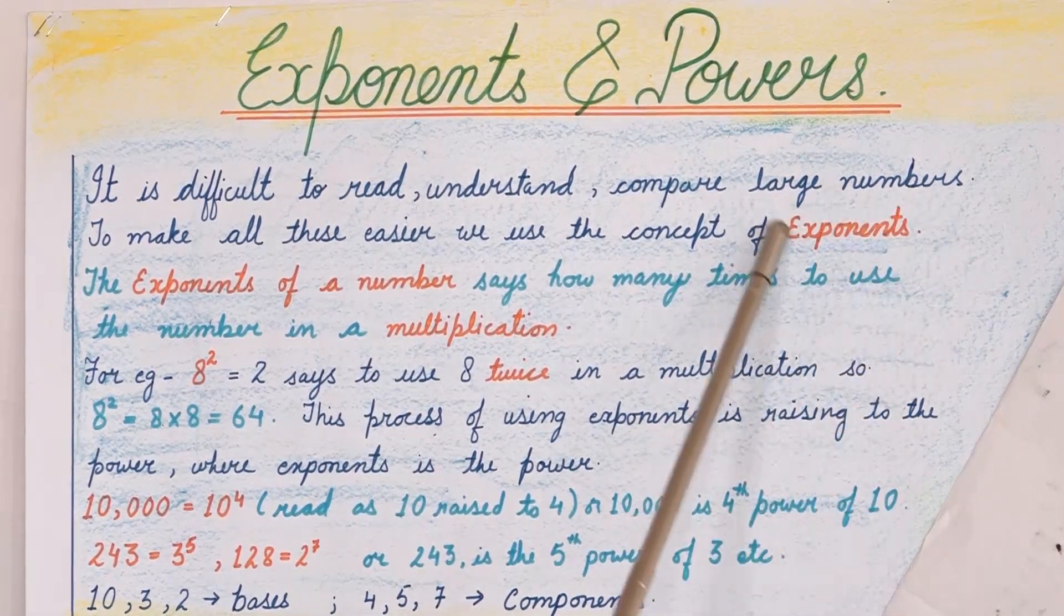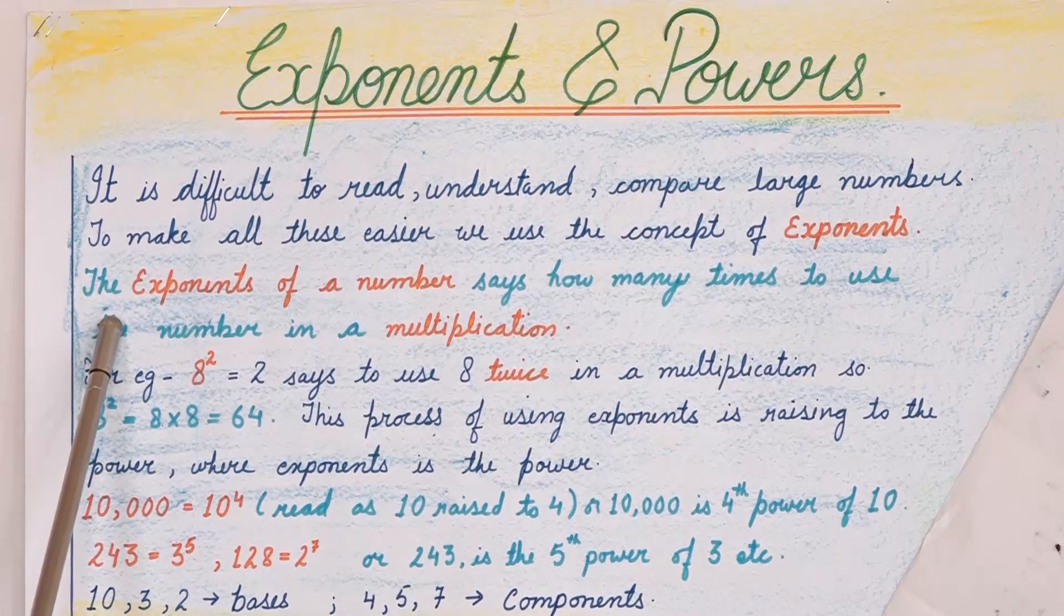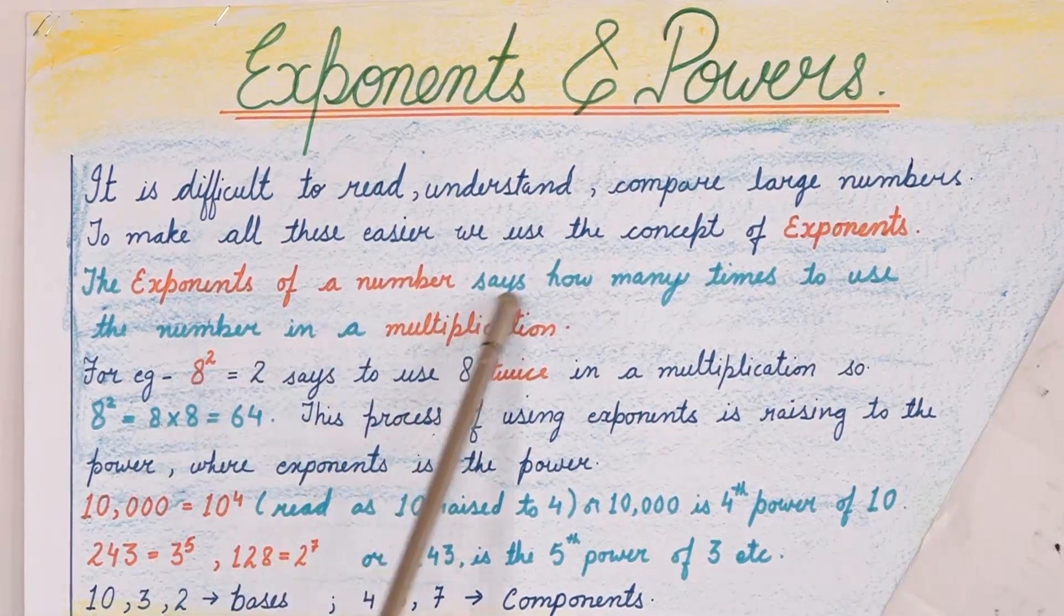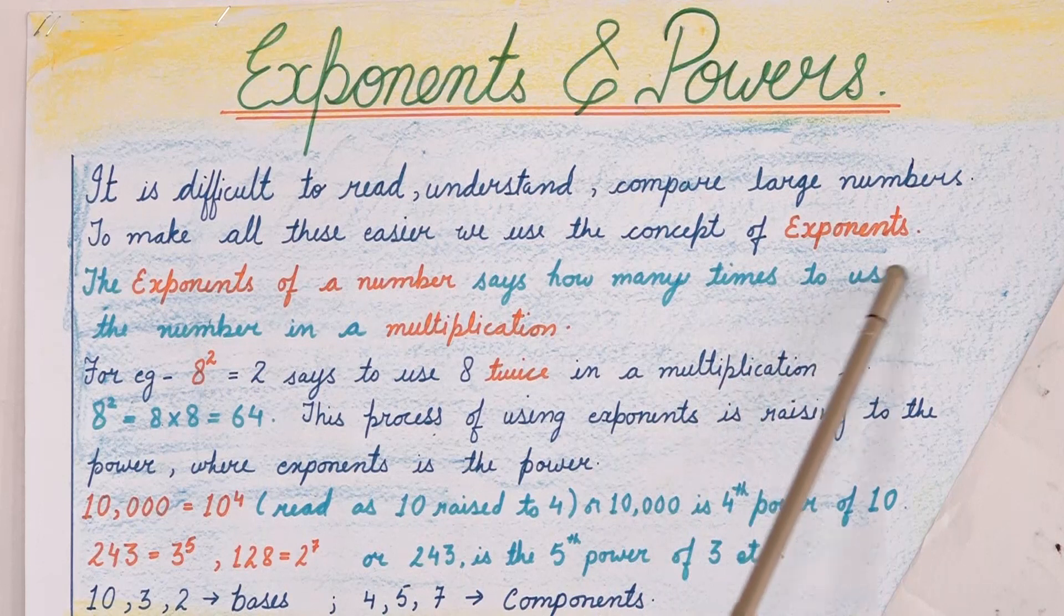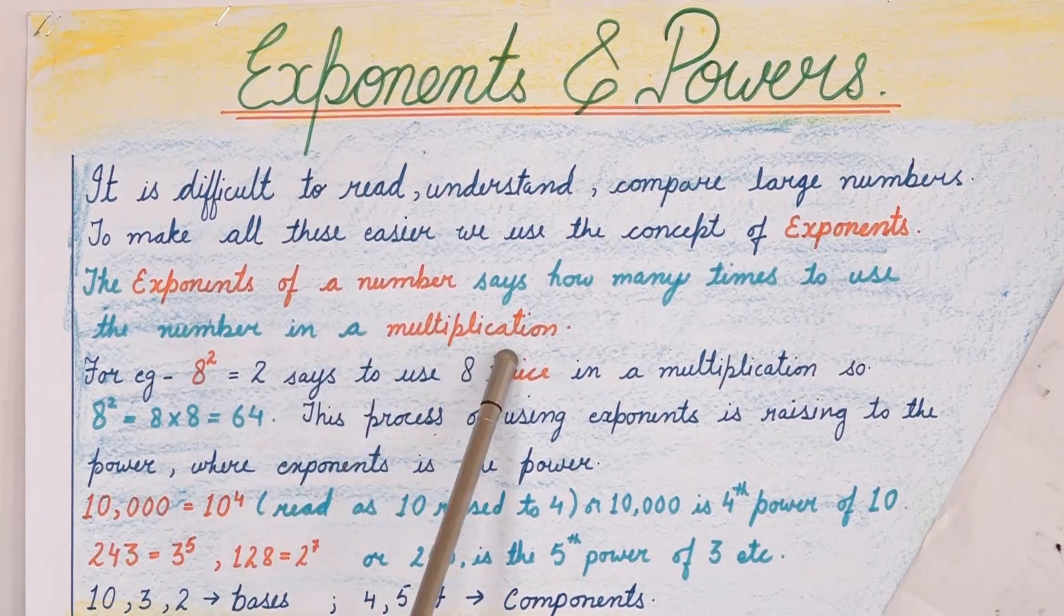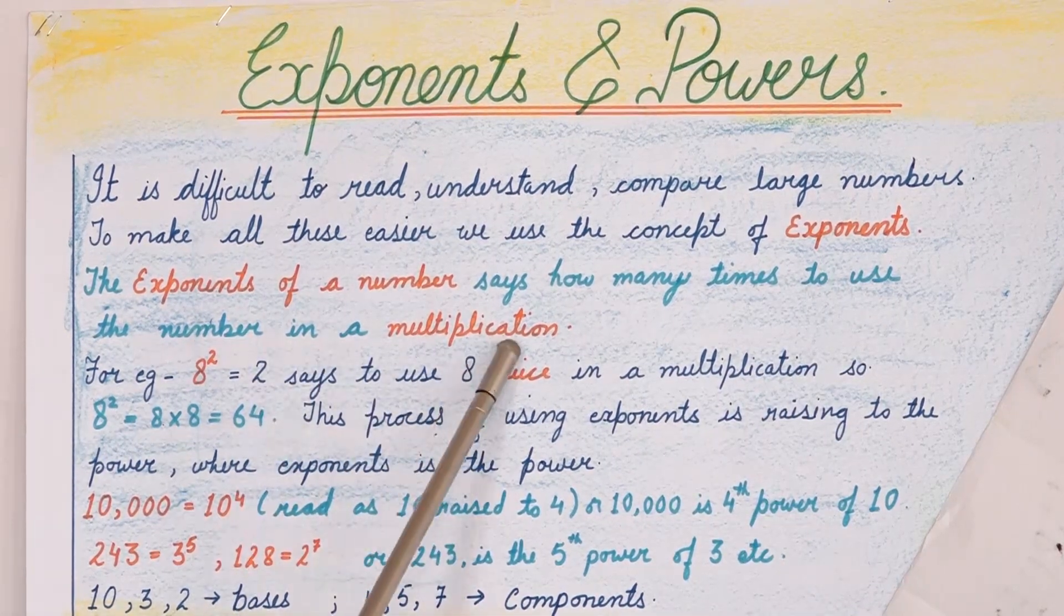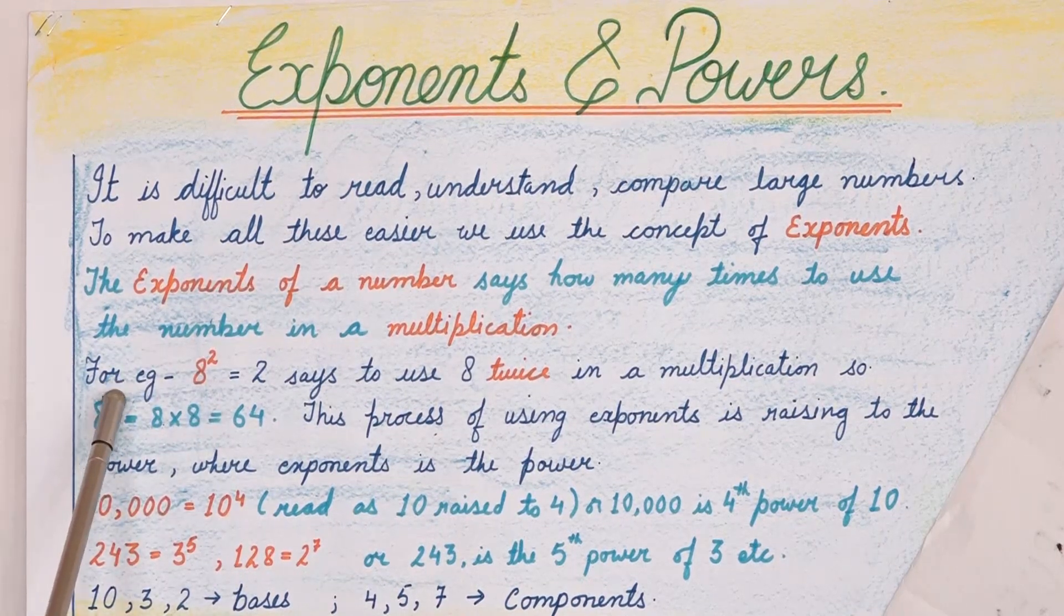So what do you mean by exponents? The exponents of a number says how many times to use the number in a multiplication. Now let us understand this concept with the help of one example.